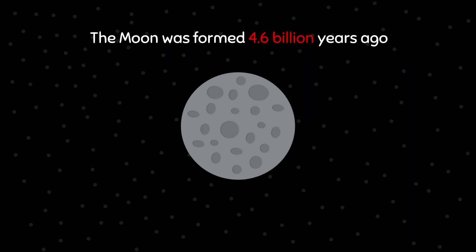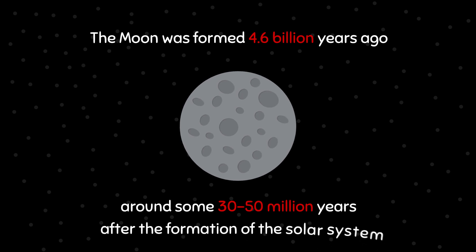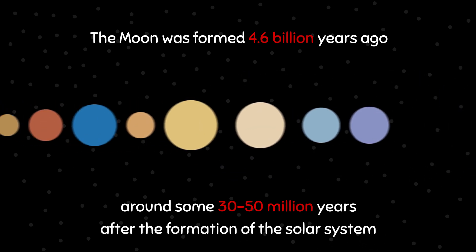The Moon was formed 4.6 billion years ago, around 30 to 50 million years after the formation of the solar system.